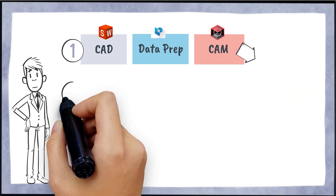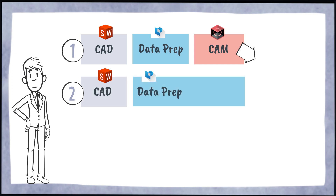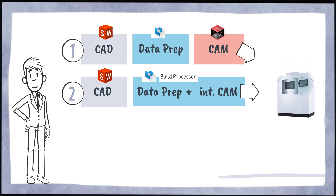As you may have guessed, there are also shorter ways for industrial serial production. For EOS customers, a common way is to use only a CAD software such as SolidWorks and to continue with Magics. With the Magics Build Processor, which accesses components of EOSPrint, you can assign exposure parameters and send the task to the machine without even opening EOSPrint itself.